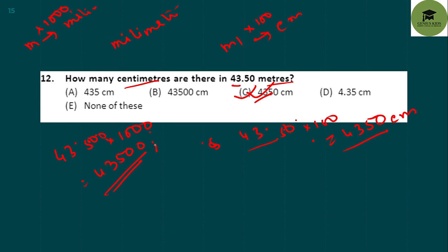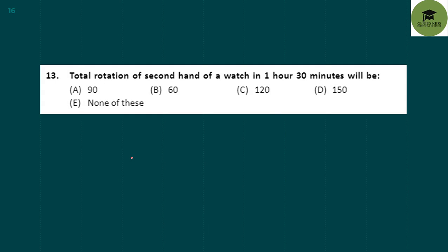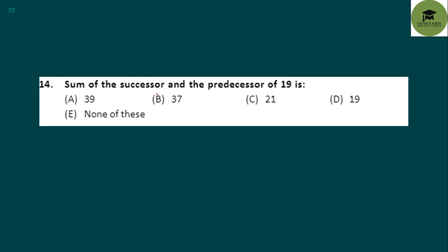Total rotation of the second hand of a watch in one hour 30 minutes will be? The second hand completes one rotation per minute. So in 60 minutes plus 30 minutes, that is 60 + 30 = 90 rotations total. Option A is your correct answer.